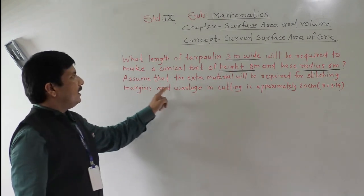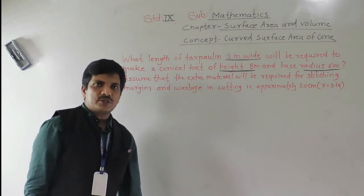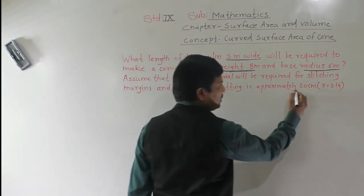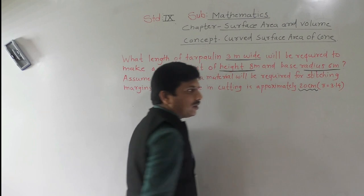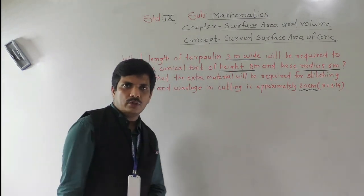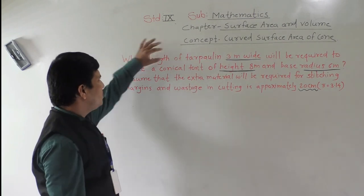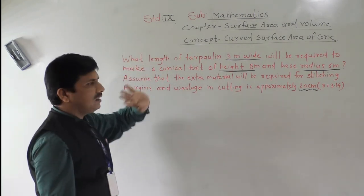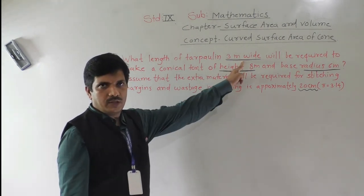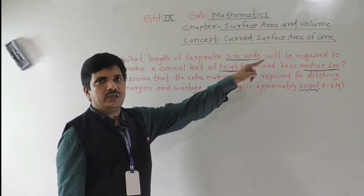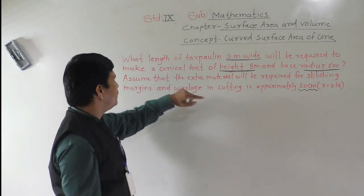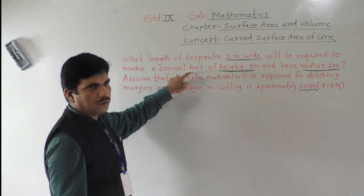Assume that extra material required for stitching margins and base edge in cutting is approximately 20 centimeters — this extra material we need to add in the final step. We need to find the length. Since length × width = area, and this is an open conical tent, we find the curved surface area.